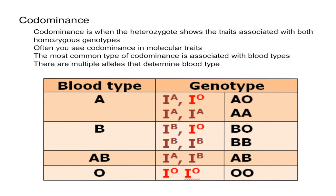Now, how does this relate to codominance? If you have an A allele and a B allele, they're both going to be expressed to give you a blood type of AB. As I stated before, the heterozygote — which is AB — shows the traits associated with both homozygous genotypes, so type A and type B. That's pretty much just what codominance is.